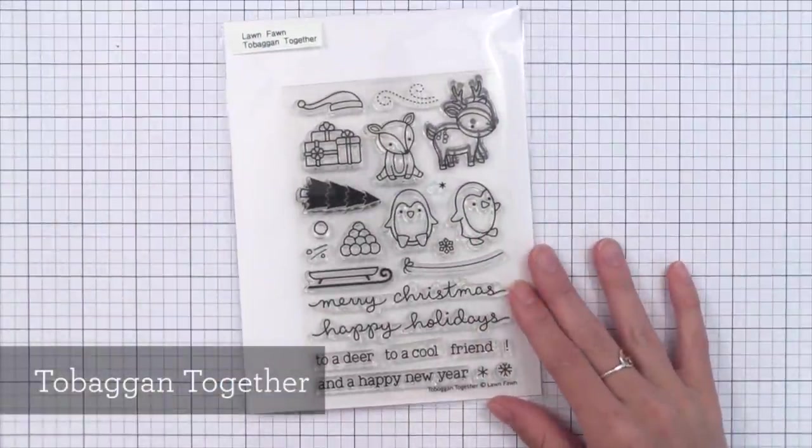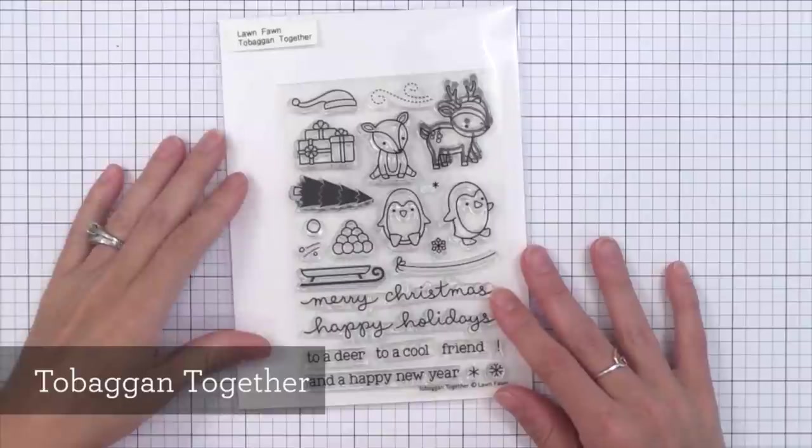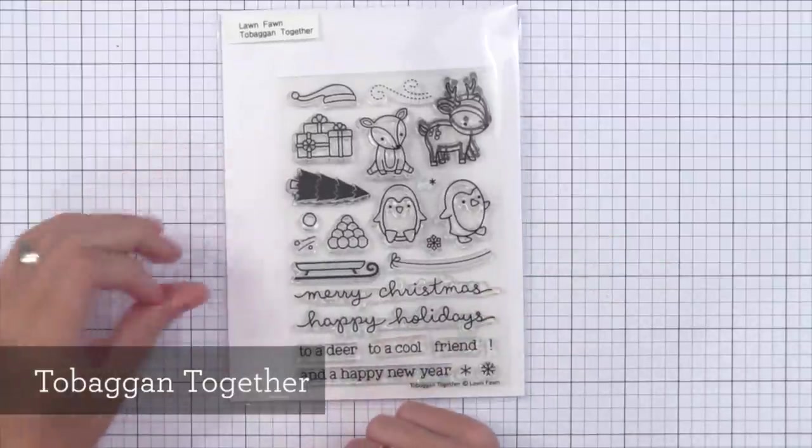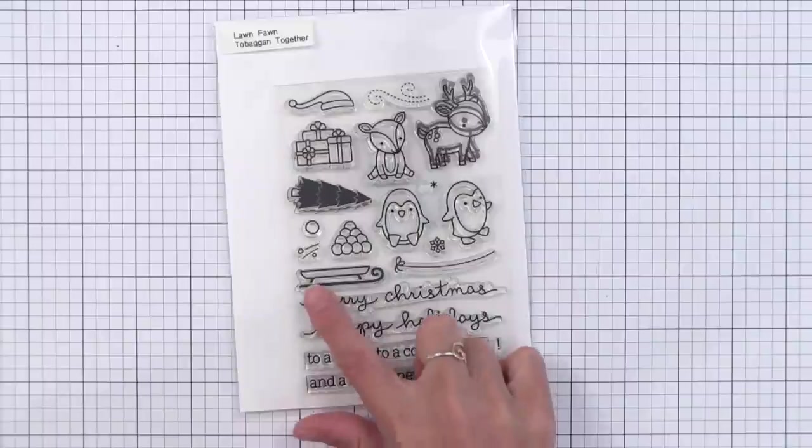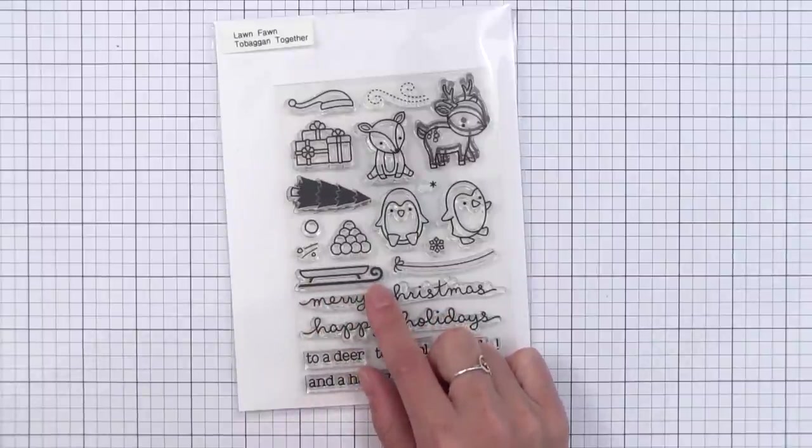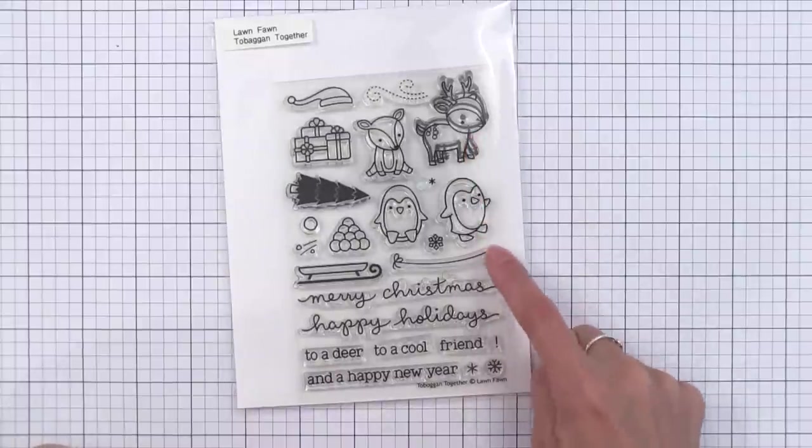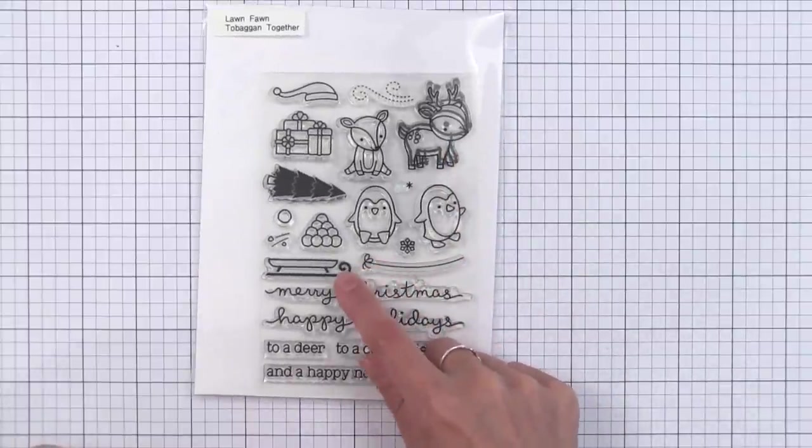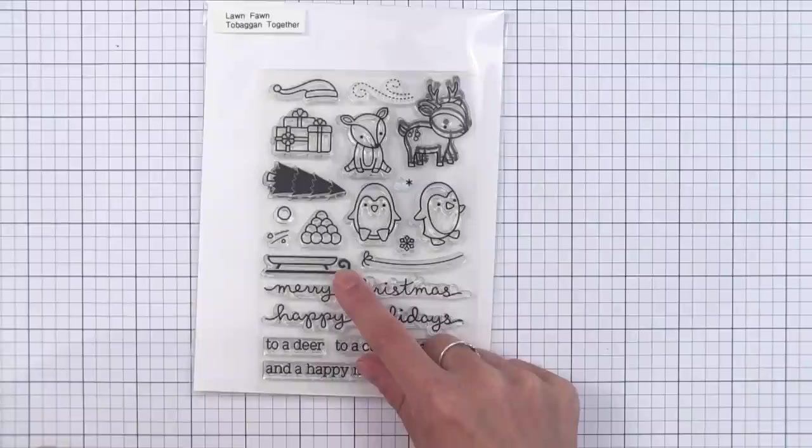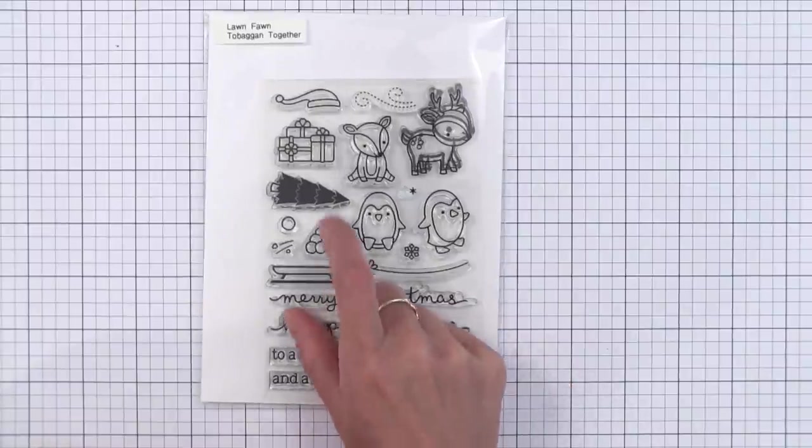First we have stamps. This is the Toboggan Together set. I think this is my favorite in this release. The images are just adorable. This is perfect for building a fun scene. You can put things like the tree or the pile of snowballs or presents on the little sled and you can have the deer pulling the sled or you can have the penguins playing with it too. You can put a little Santa hat on top of the critters.